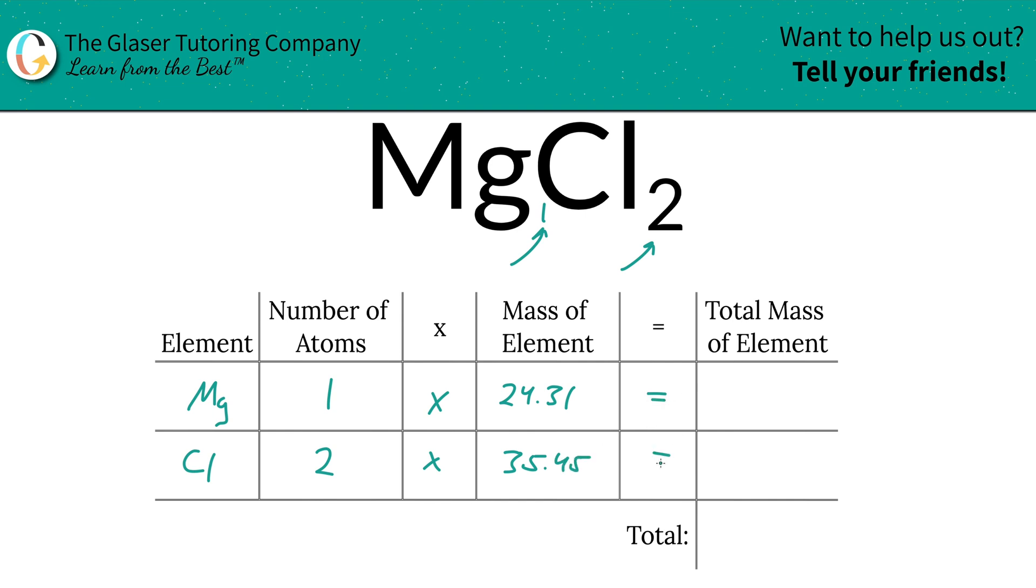And then simply to find the total mass of the element now, you're simply going to multiply the row across. So the total mass of magnesium is going to be 24.31 units of mass. And then for chlorine here, it's going to be 70.90.